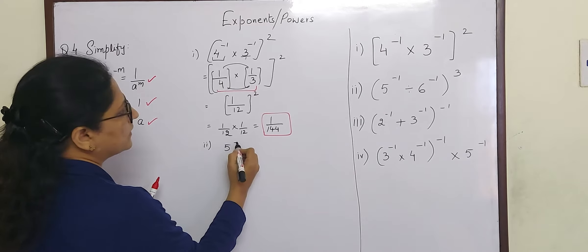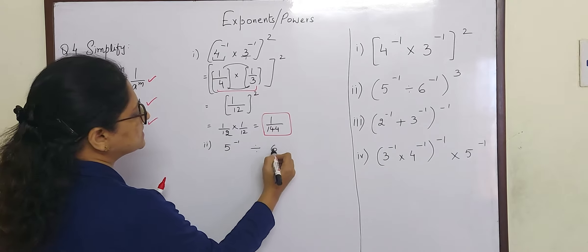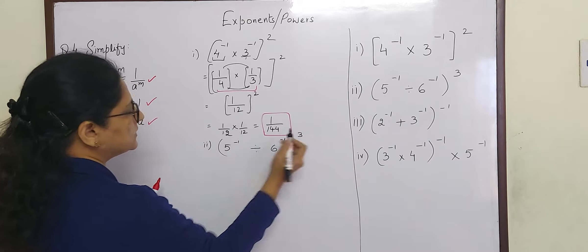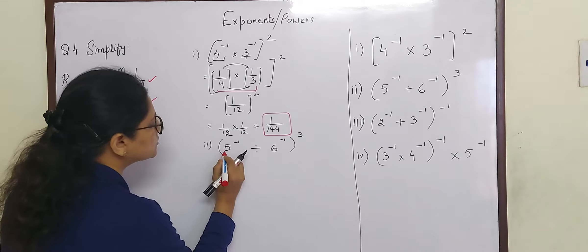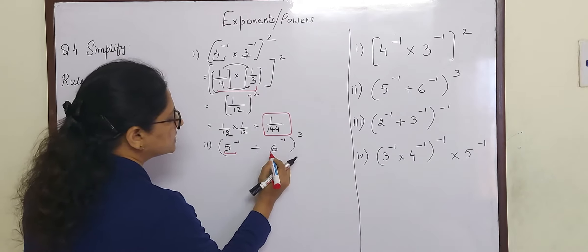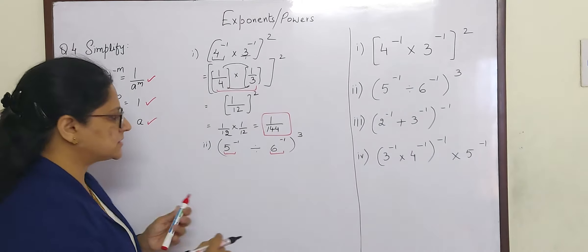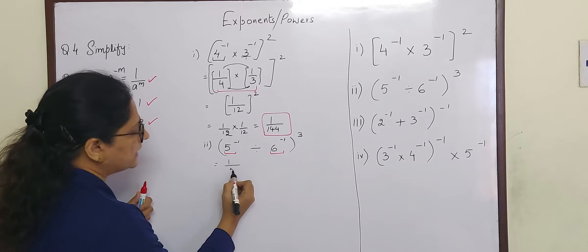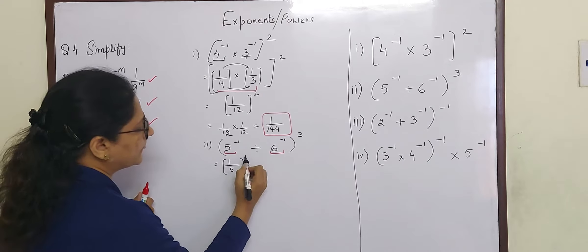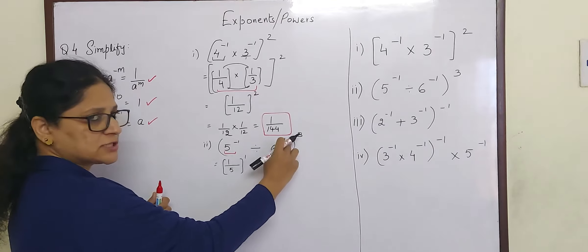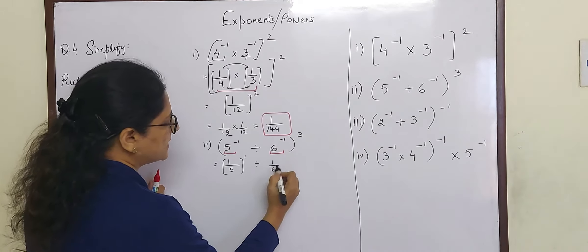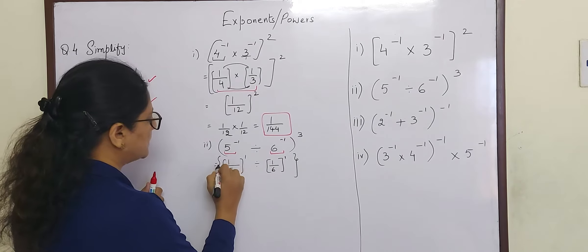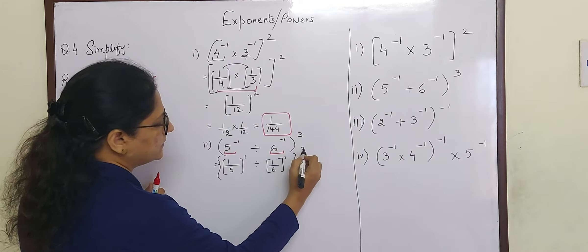Next sum: 5 raised to minus 1 divided by 6 raised to minus 1, the whole raised to 3. Our job first is to convert this into a positive exponent. So A raised to minus m is 1 by A raised to m. 5 raised to minus 1 becomes 1 by 5 raised to 1, divided by 6 raised to minus 1 becomes 1 by 6 raised to 1, and this 3 will come here.